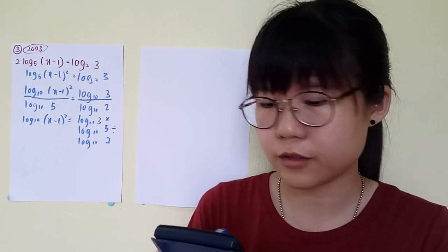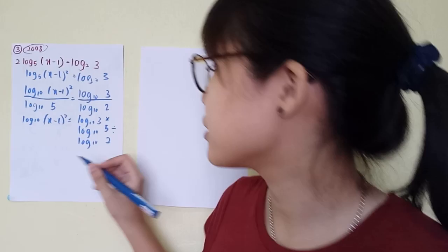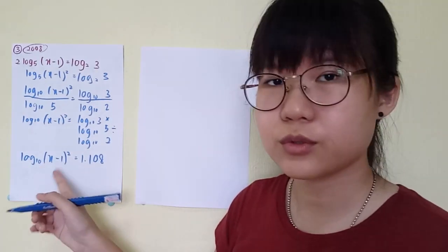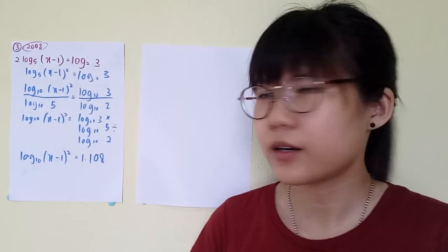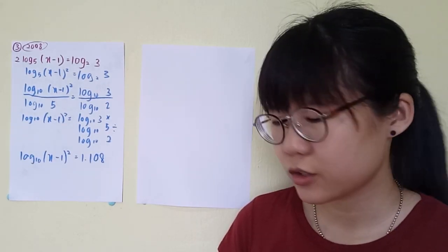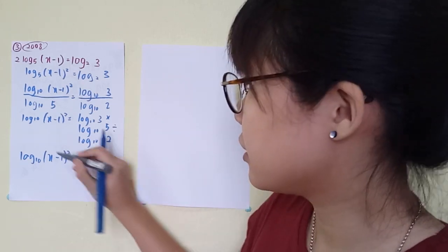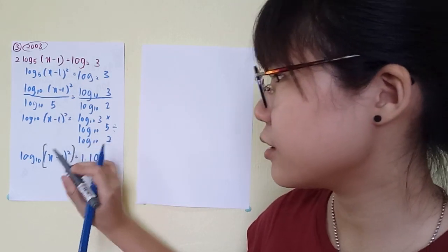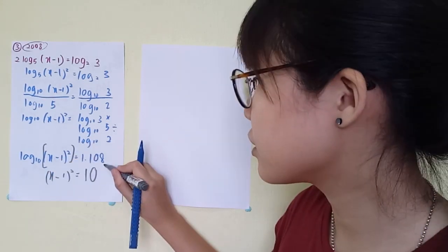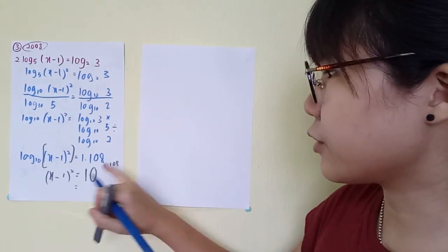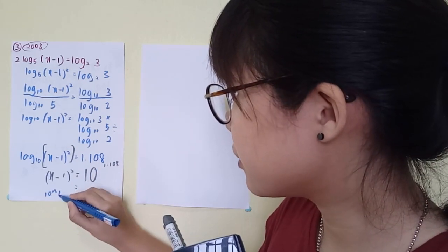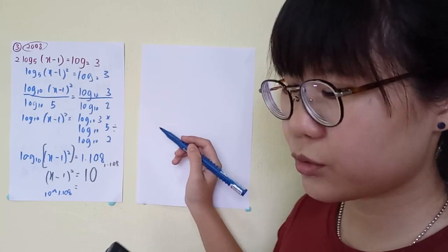Type the known values into your calculator — for example, log10(3) — to get their decimal values. Now apply the definition of logarithm again: the center stays, small becomes big and big becomes small. The result gives log of the x-expression equals 1.108. To find the value of (x−1)², type 10^1.108 into your calculator and get approximately 12.82.